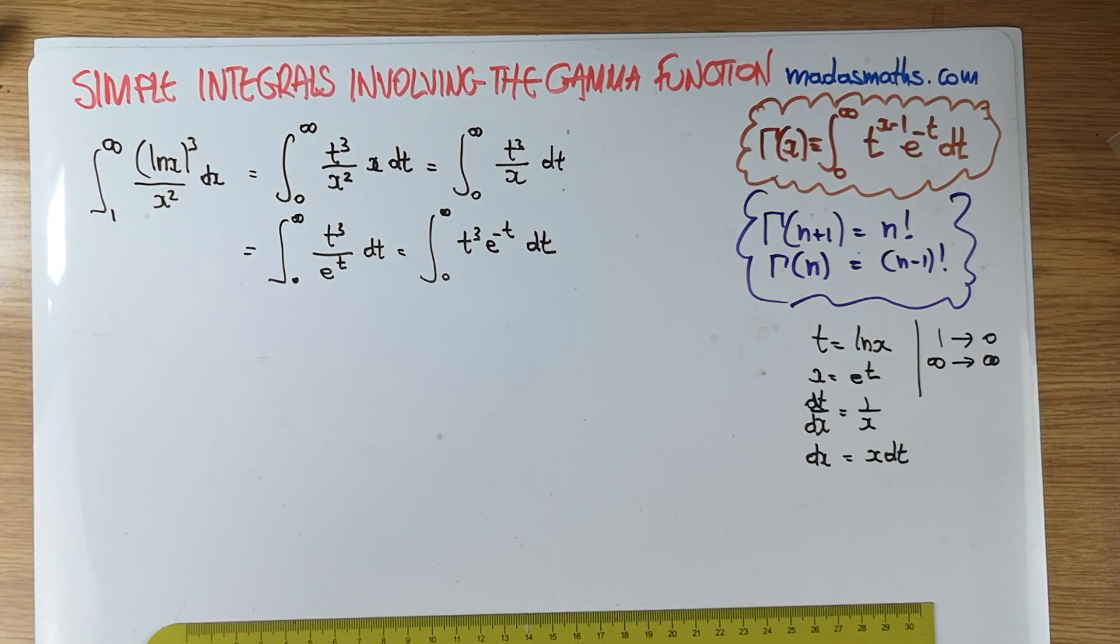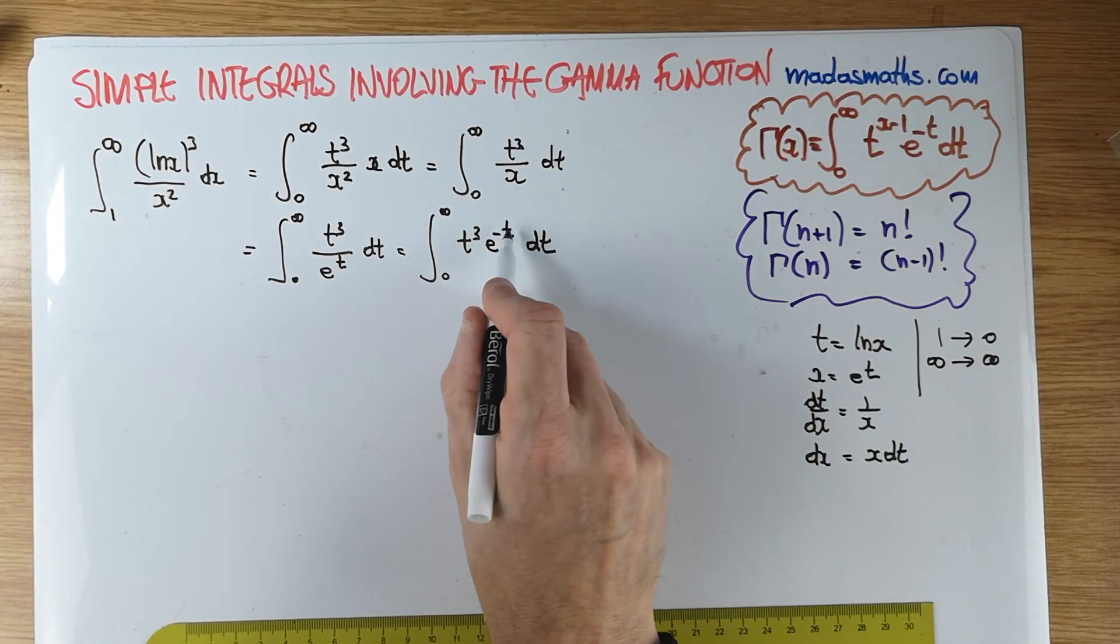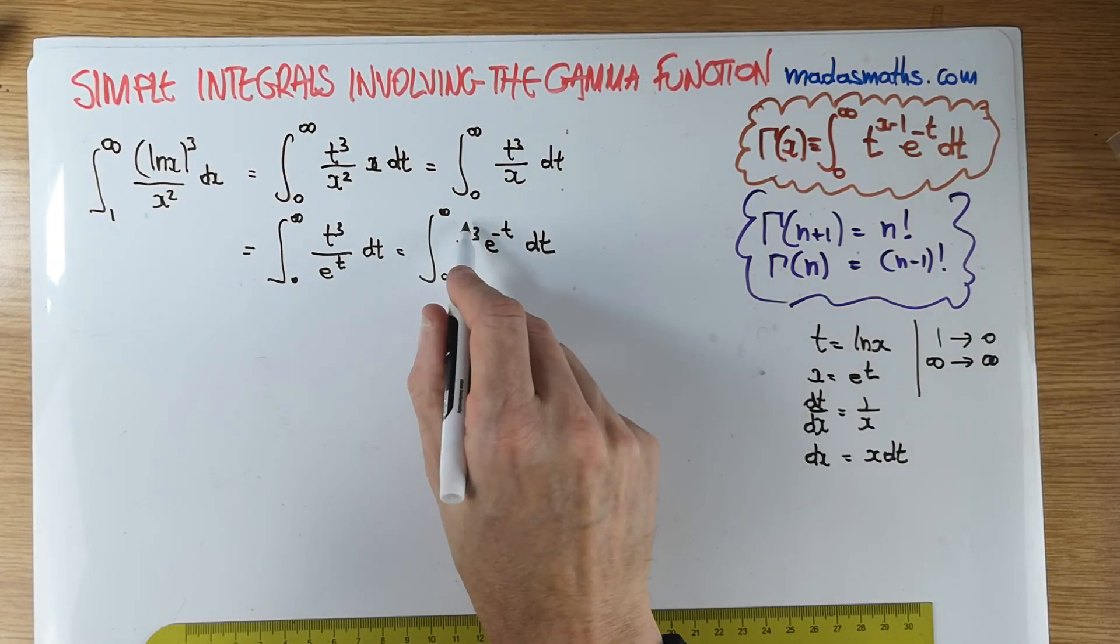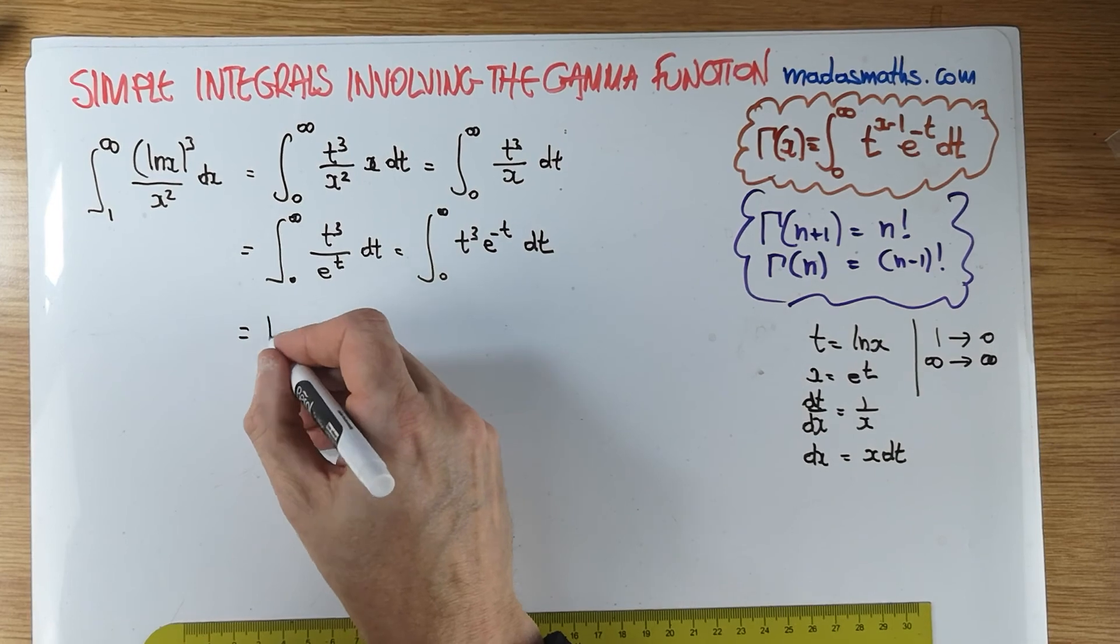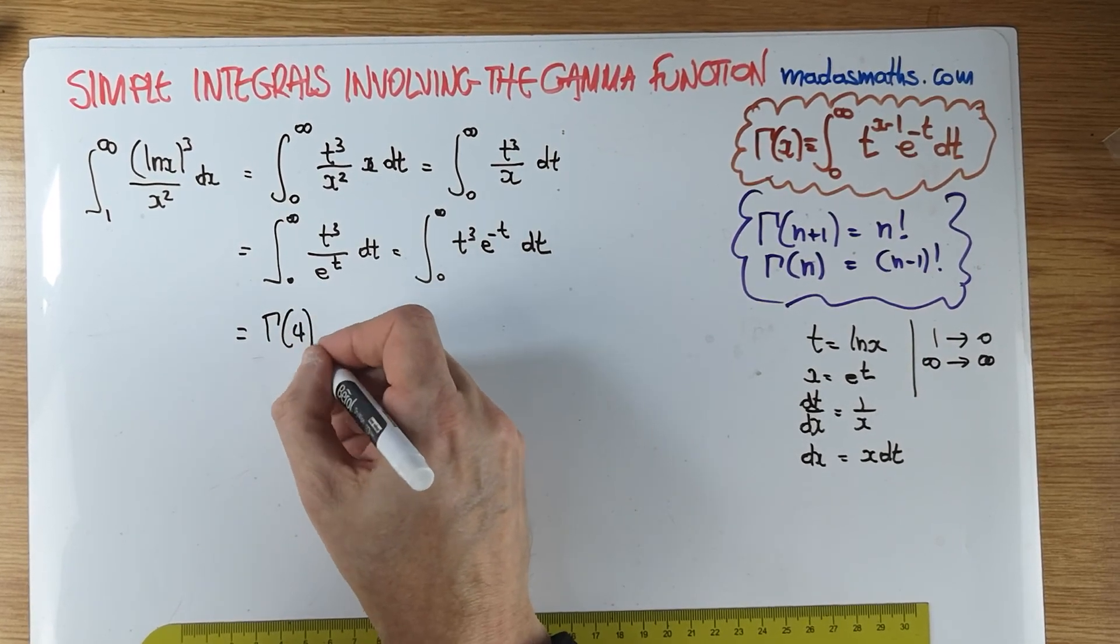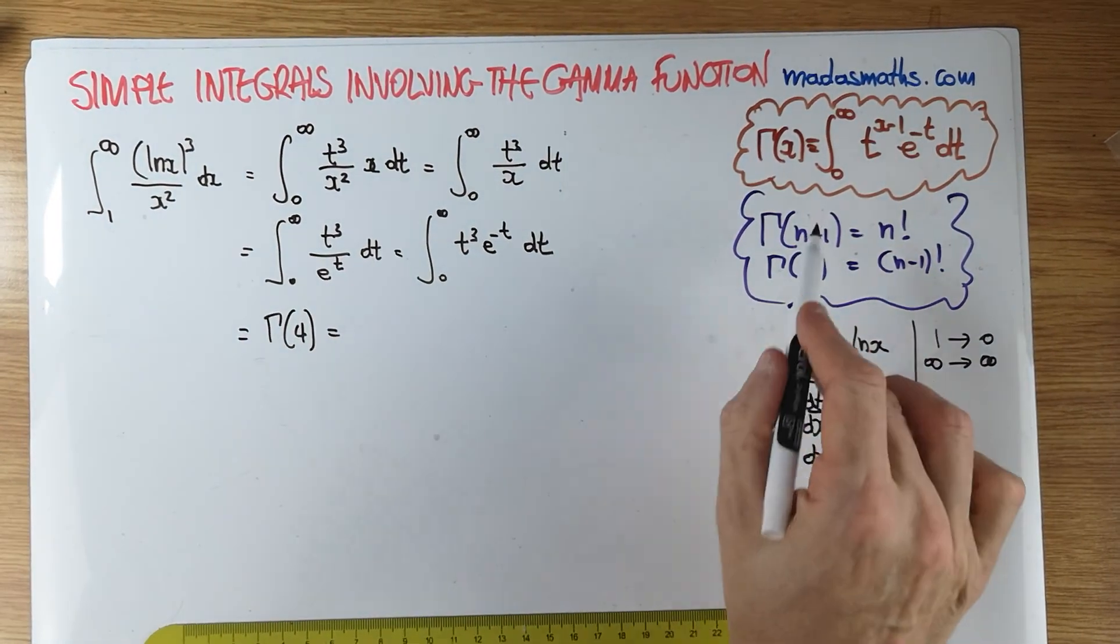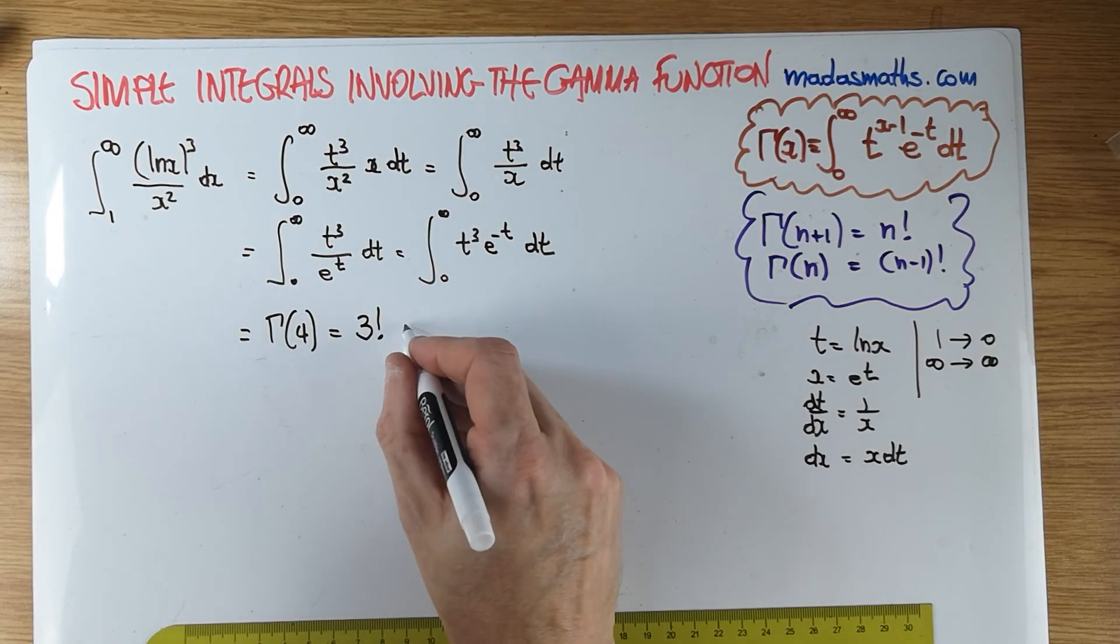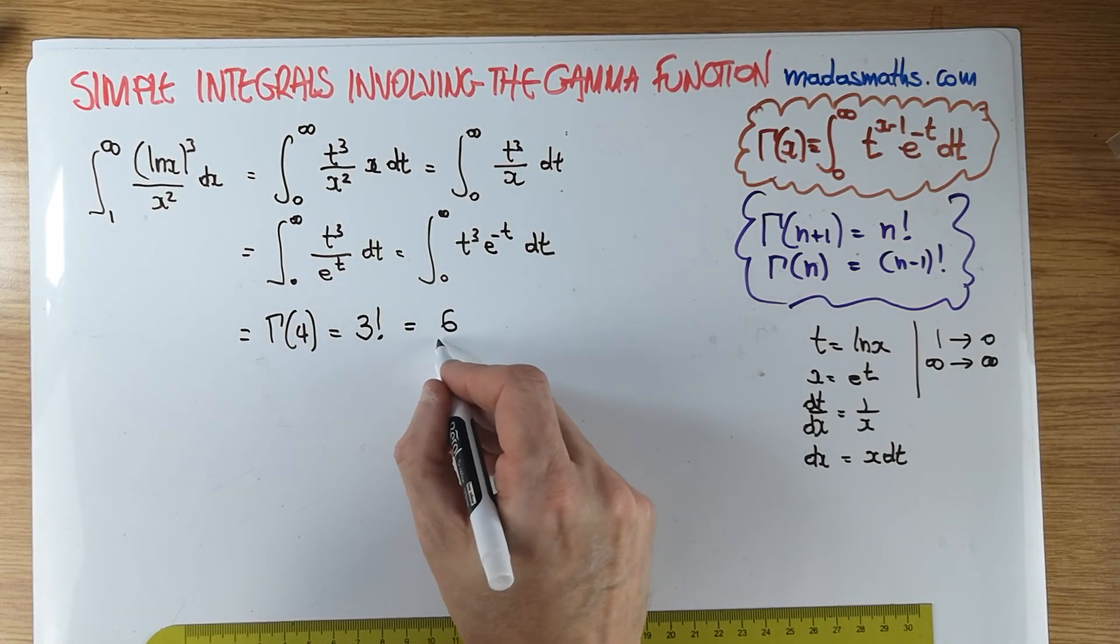And of course, this is now a gamma function. And this gamma, that's already as we want it in here, is just a gamma of one more than what we got in here. So that's the gamma of 4. And the gamma of 4 from this result here is going to be 3 factorial. And the answer to that is going to be 6.